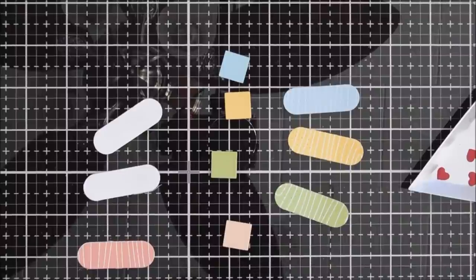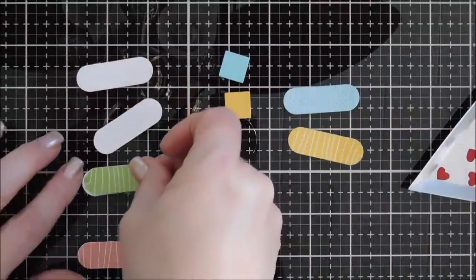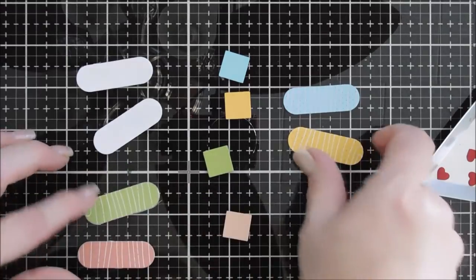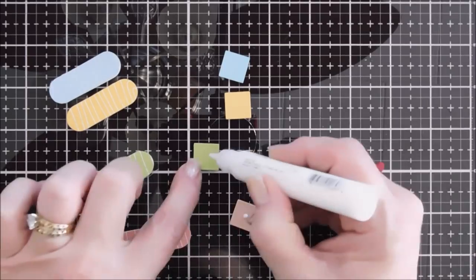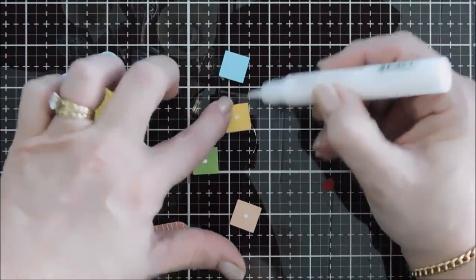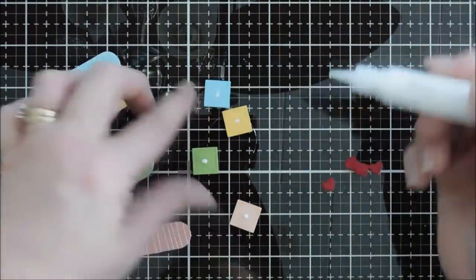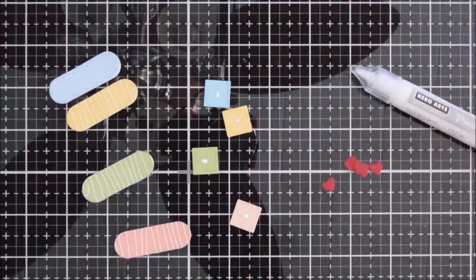But I went ahead and added my pattern paper to each one of these just for a little extra strength. I'm just taping using my tape runner. We'll line it up and then these guys are good to go. After we have this done I'm going to bring in some glue and just add a tiny dot to each one of my squares.